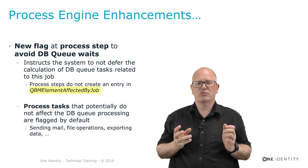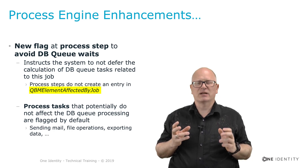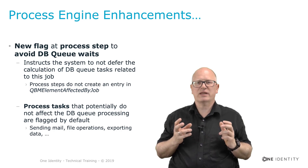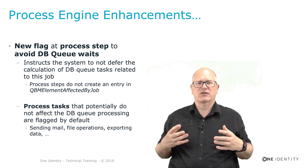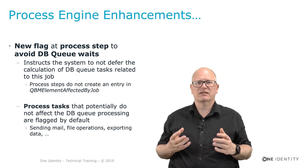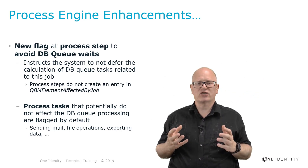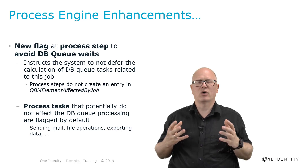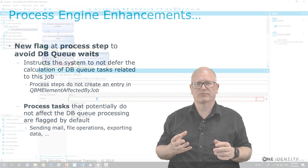There is a table called QBM Element Affected by Job, and entries in this table are responsible for DB queue waitings. Additionally, a set of tasks is shipped with the new flag set. That means, for example, send mail jobs will not generate entries in that specific table, and because of that, the DB queue will not hold and wait until these jobs are provisioned.